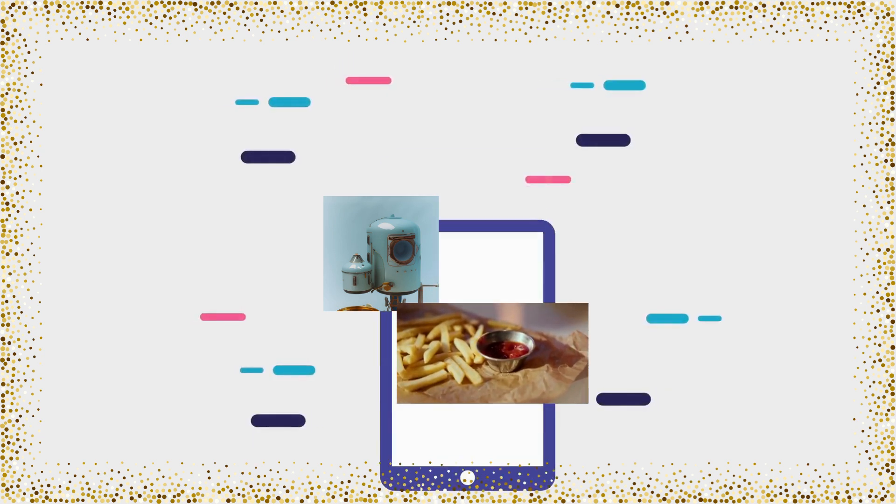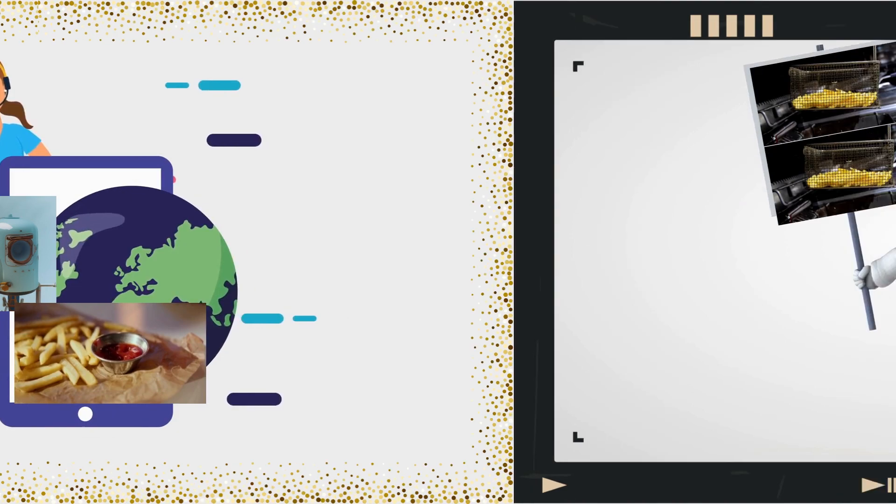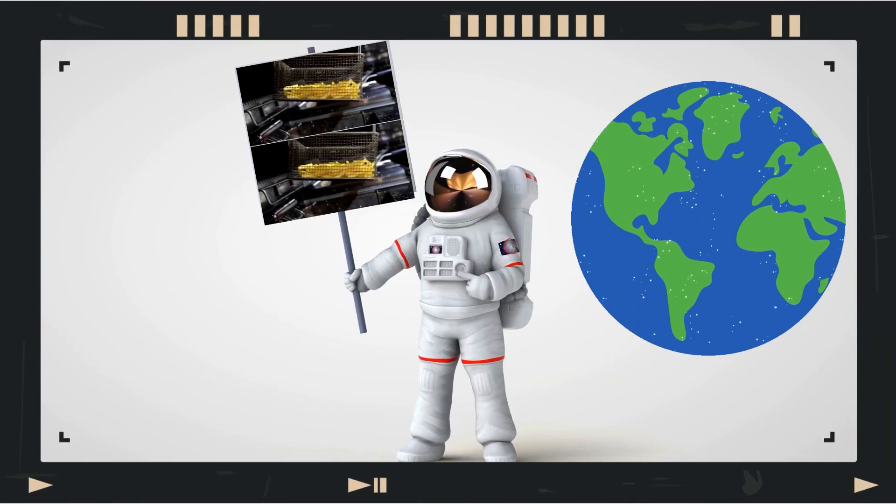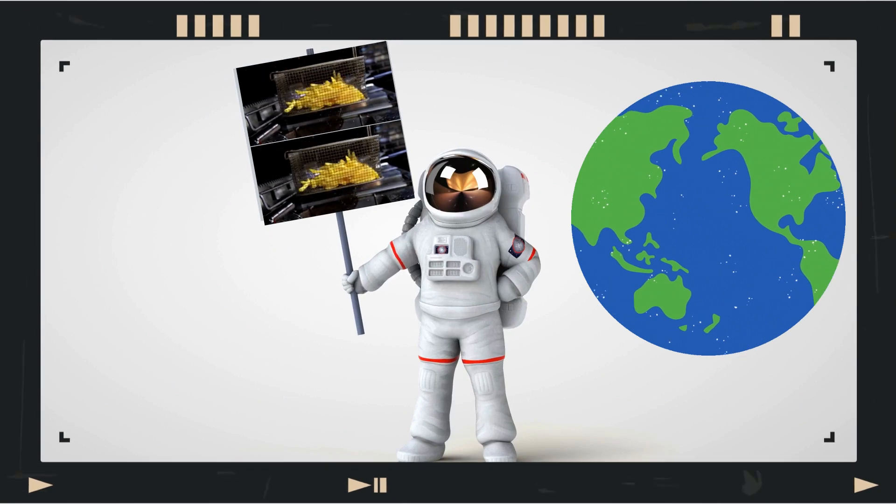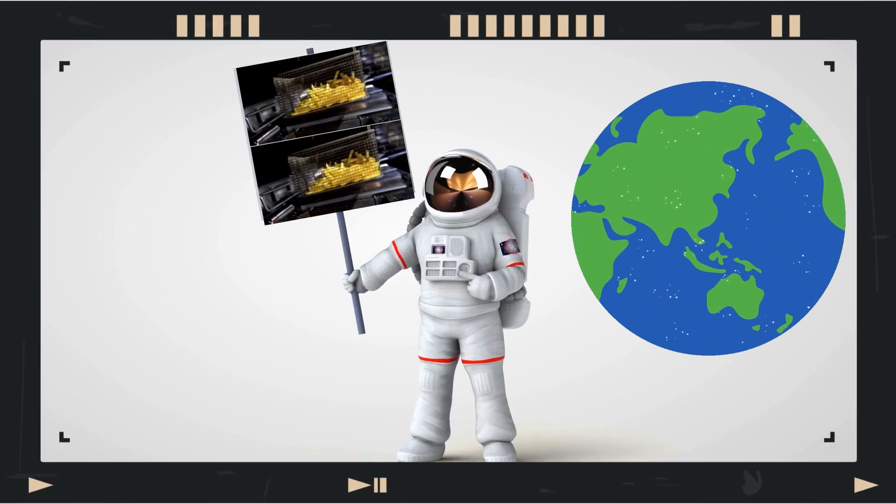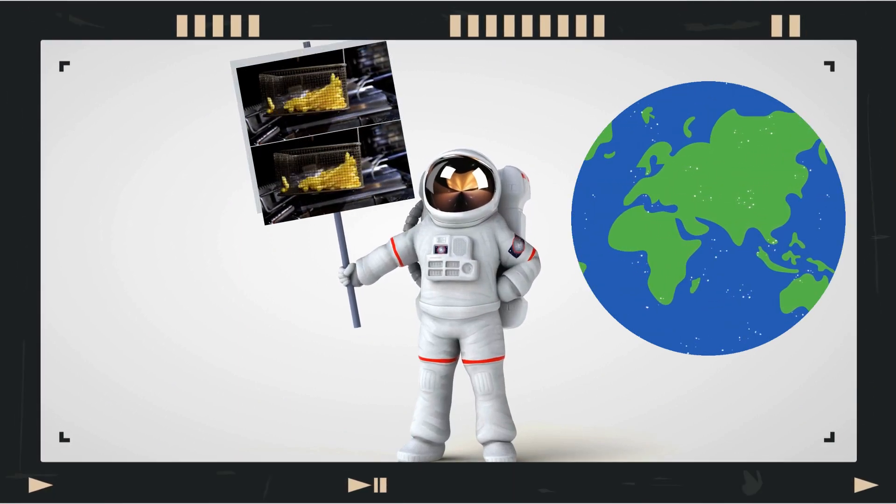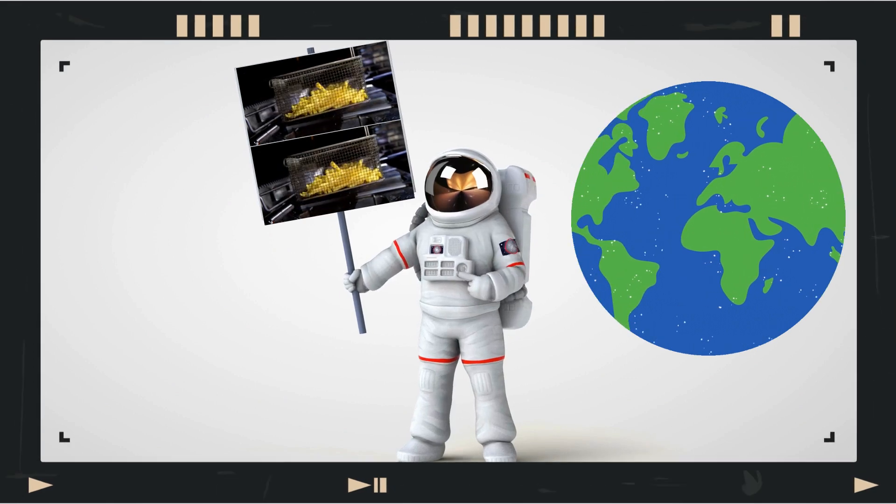The process of buoyancy makes the act of frying potato on land possible. Buoyancy causes bubbles to form at the bottom of the pot, which rise to the top and enable the frying process.